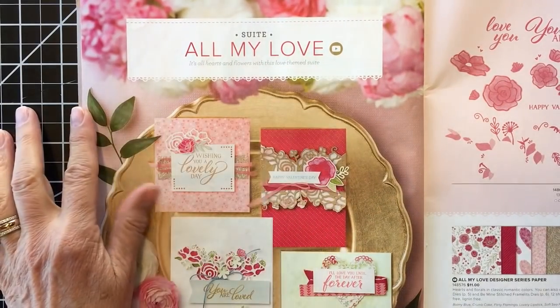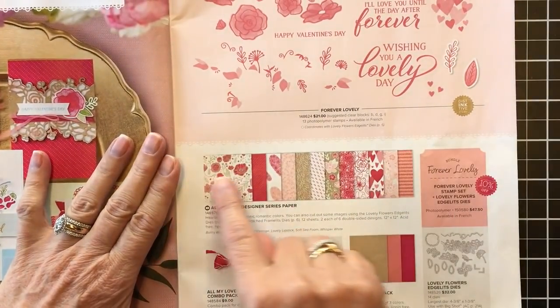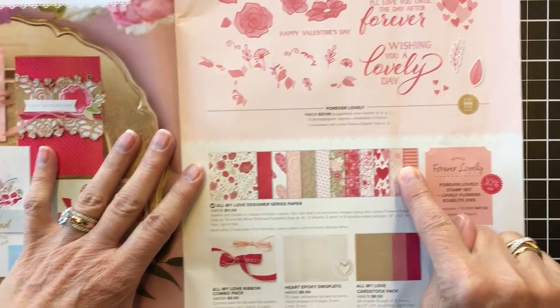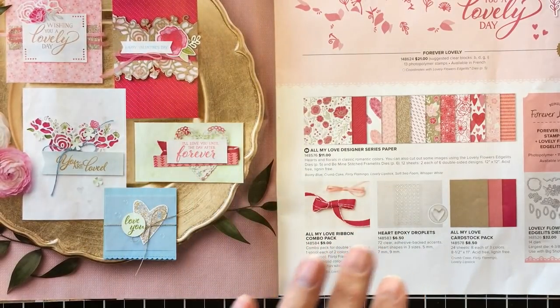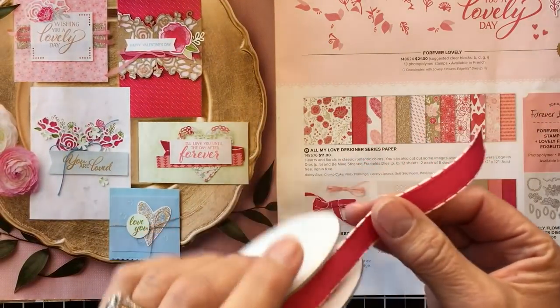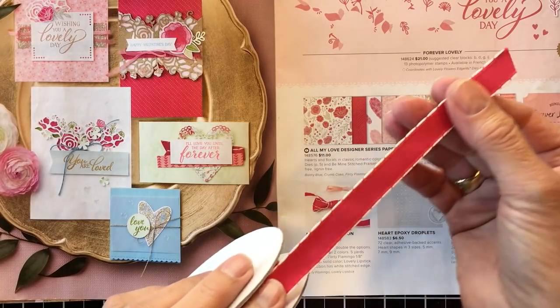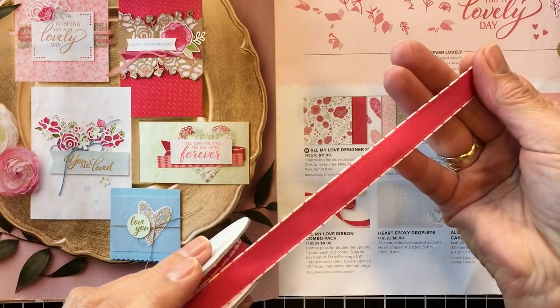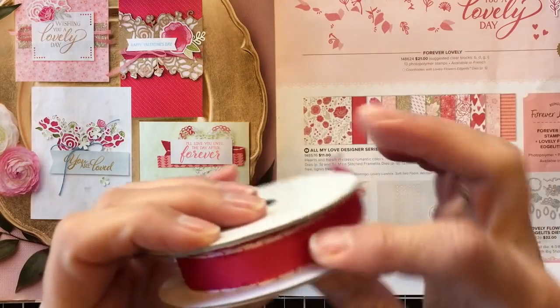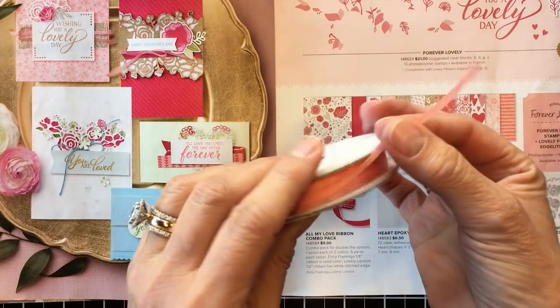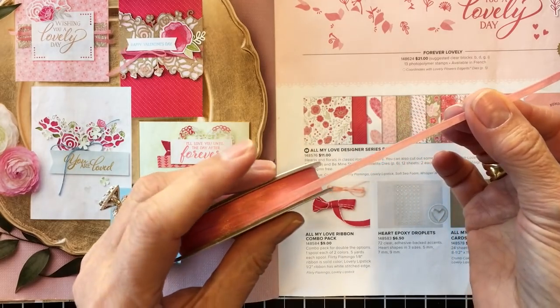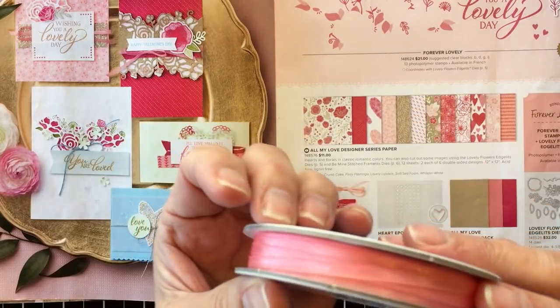Speaking of product coordination, most of the products I used come from the All My Love product suite in the 2019 occasions catalog. You'll see that I used some of the designer series paper and this amazing ribbon. Let me show it to you because I love it. It's a combo pack. The ribbon I used on those treats has this beautiful white stitched edging and it's a lovely lipstick.